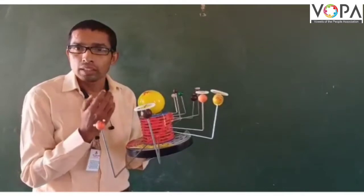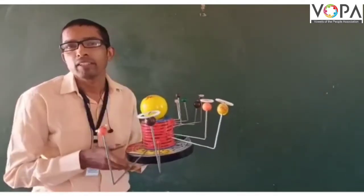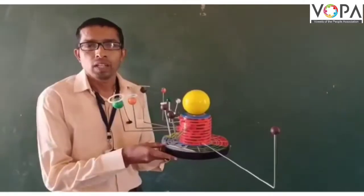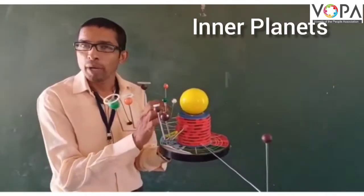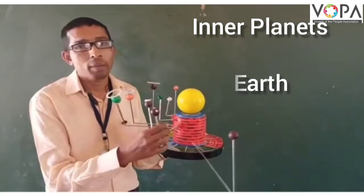The Sun rotates the center of our Milky Way. You observe that Mercury, Venus, our Earth and Mars are the inner planets.